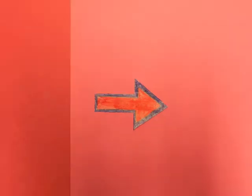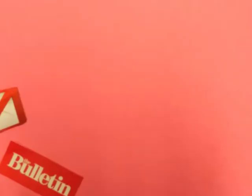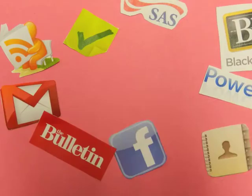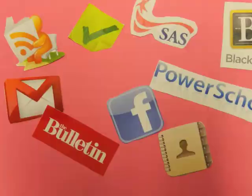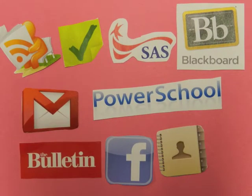Step two: Decision. Decision is deciding all the components to include in an app. For our students, it would include Facebook, Blackboard, PowerSchool, contacts, to-do list, email, bulletin and news, etc.